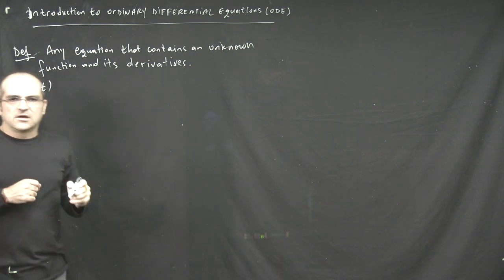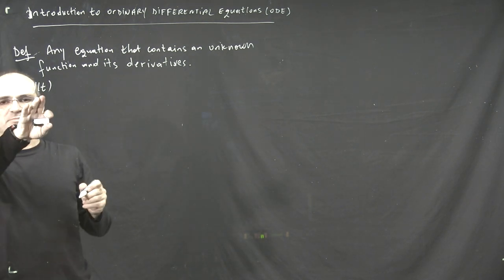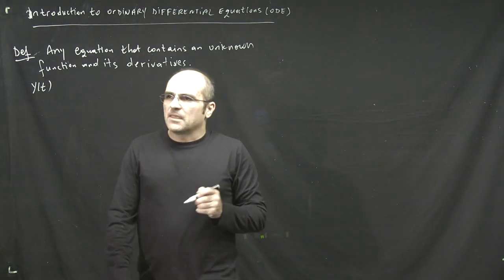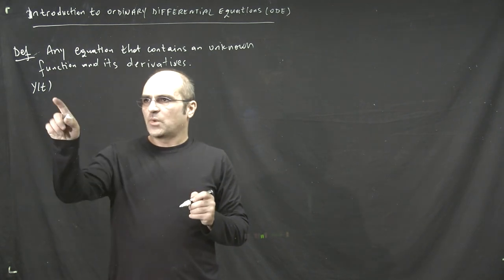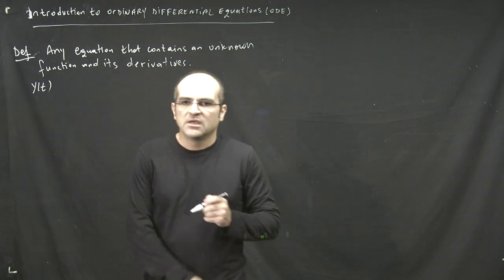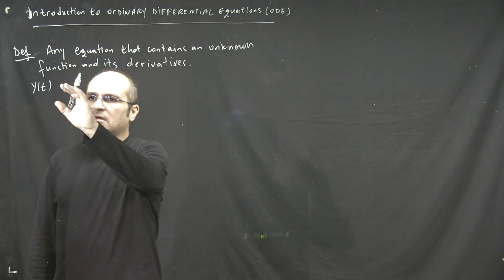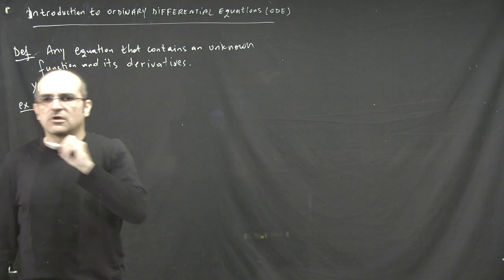Remember y of t - the variable t typically denotes time. Most real-life applications that involve differential equations are time-dependent, so t typically denotes the time variable. Let's say you try to find a function of t that is subject to the following equation. So let's try an example here.